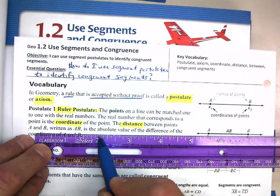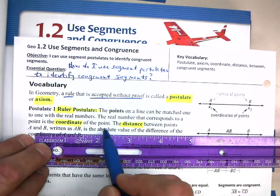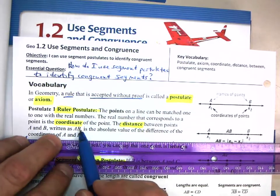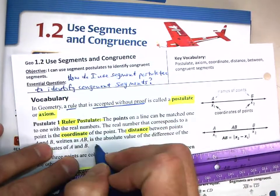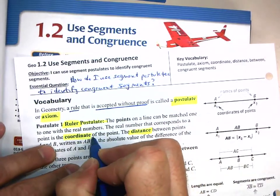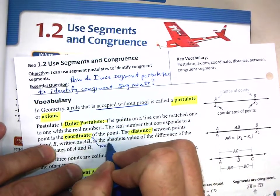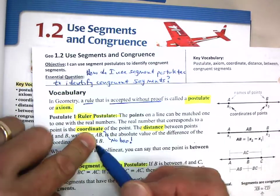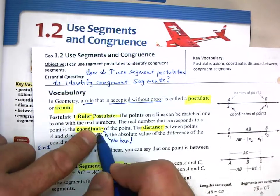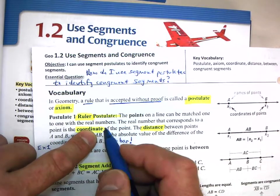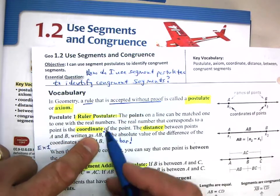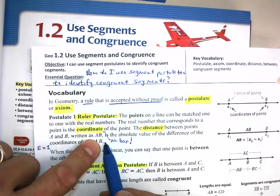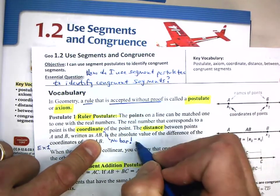The real number that corresponds to the point is the coordinate. The distance between points A and B, written as AB—notice there is no bar. Let's put a little note here and say no bar. When there's a bar on top, that would be a segment. When there's a bar with one arrowhead, that's a ray. When it's a bar with two arrowheads, it's a line.